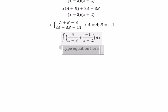The integral of 4 over x minus 3, you go about 4 multiply with ln of the absolute value of x minus 3, and we have negative of ln of the absolute value of x plus 2, and we have C is about constant.